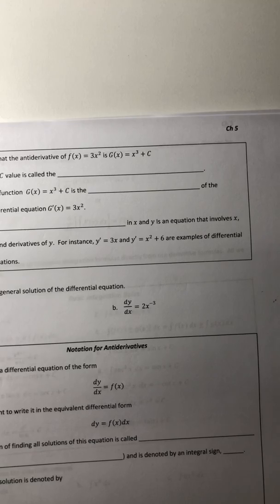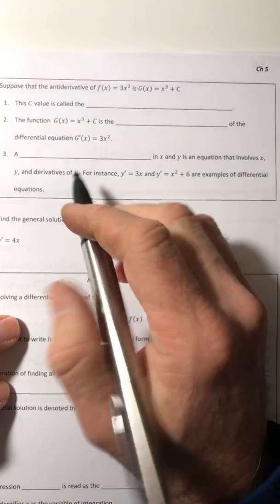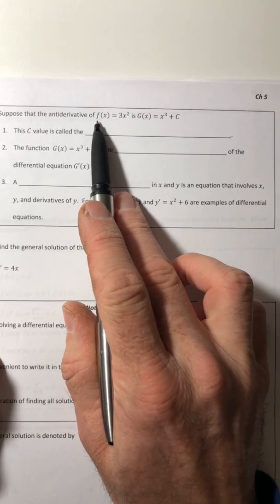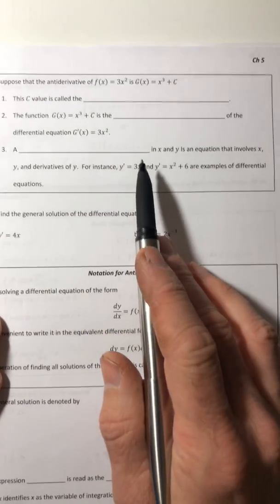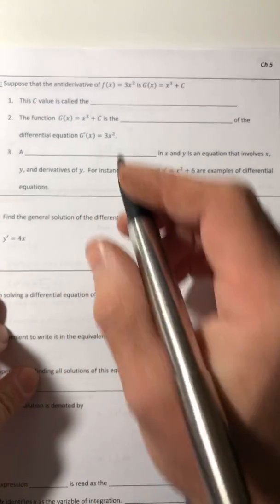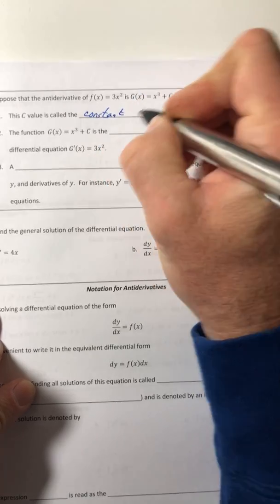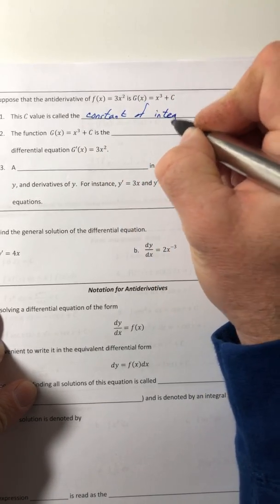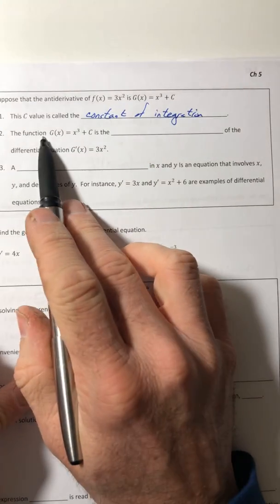Let's go ahead and look at some other definitions here and get those filled in. So this one we just kind of did in that example. If f is 3x squared, then its anti-derivative is x to the third plus c. So for number one, the c value is called the constant of integration.